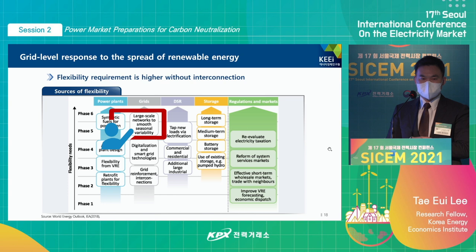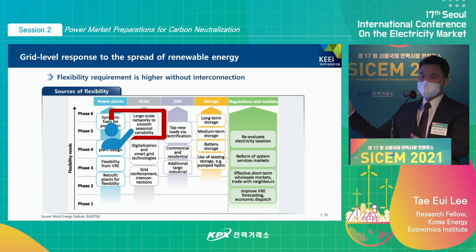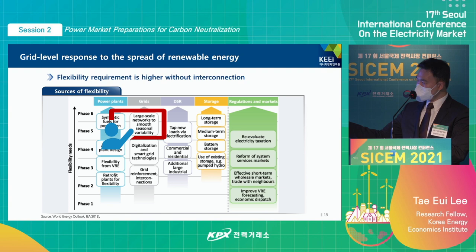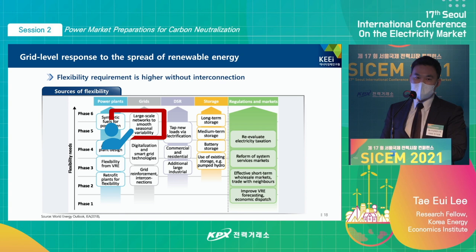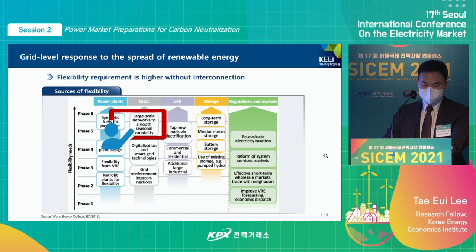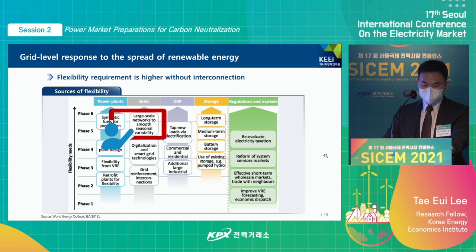In the IEA framework, large-scale network and smooth seasonal reliability are being discussed from phase 5 onward, which means when the supply of renewable energy reaches 50% to 60%. But in the case of Korea, from phase 2 we need interconnection between countries, which is difficult to achieve. Therefore, we will have to move towards the measures listed in the table and secure tools to respond to seasonal changes in energy supply and demand, compared to Europe and other countries.